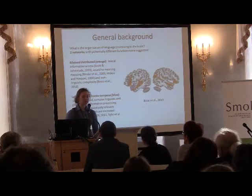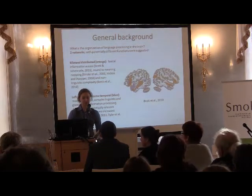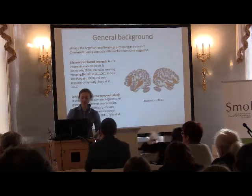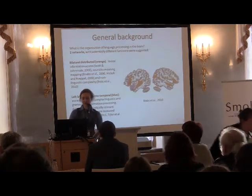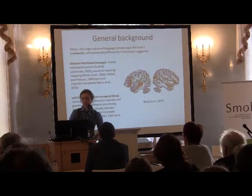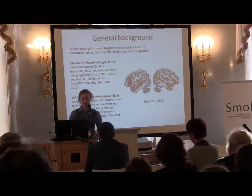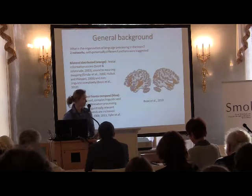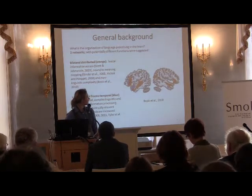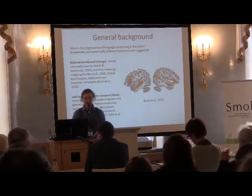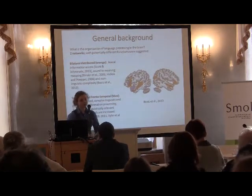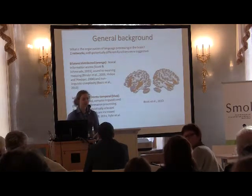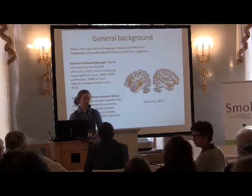Two networks have been described with potentially different functions. The first is the bilateral distributed network, shown here in orange, involving areas on both the left and right temporal cortices and also the inferior frontal areas. This network has been described as involved in more general linguistic processing, lexical information access, sound-to-meaning mapping, and non-linguistic complexity.